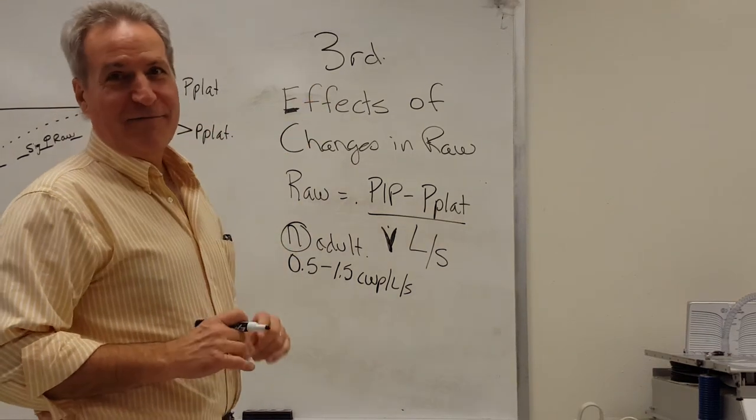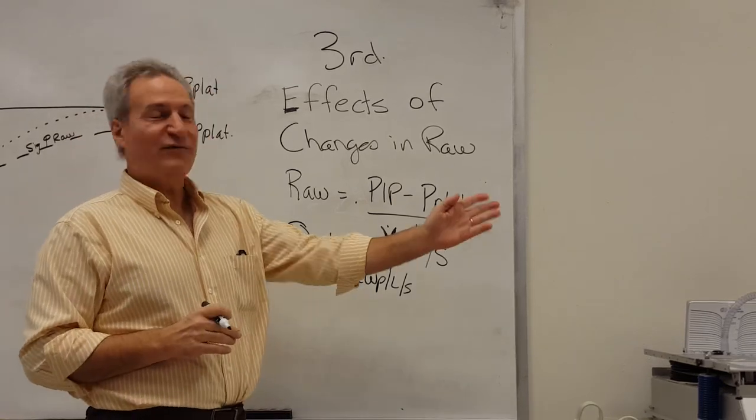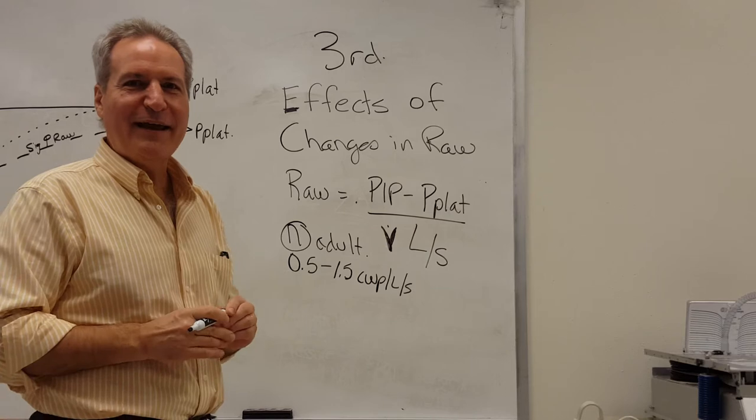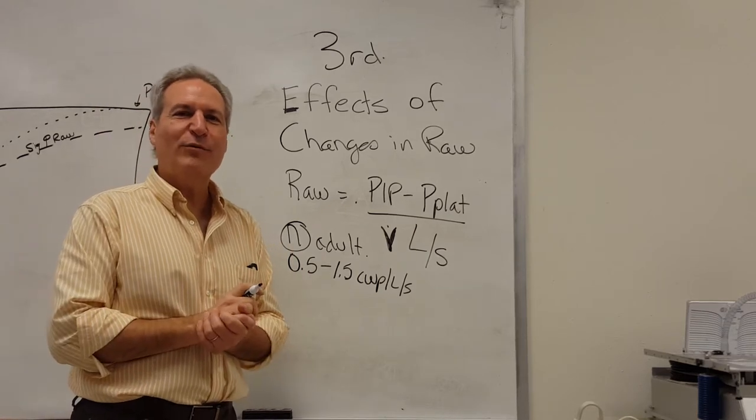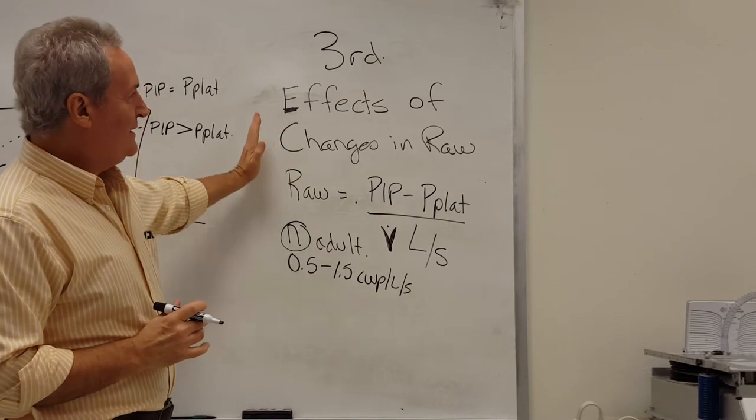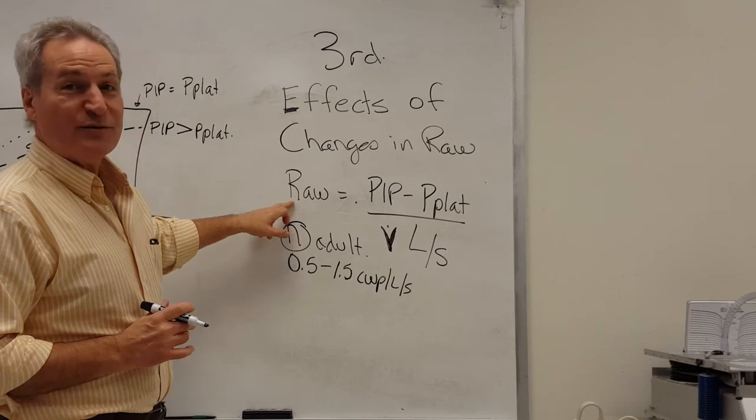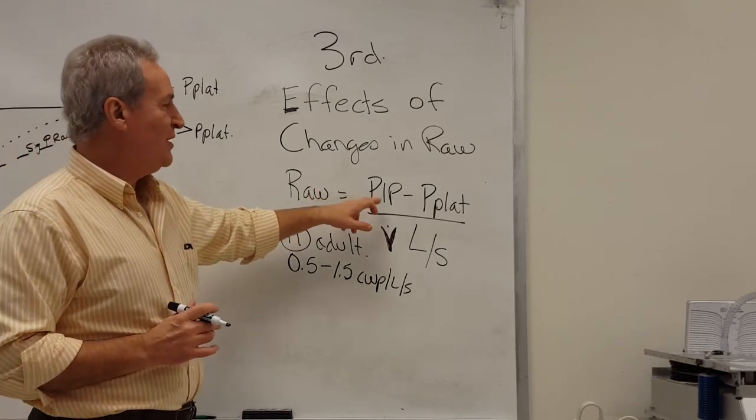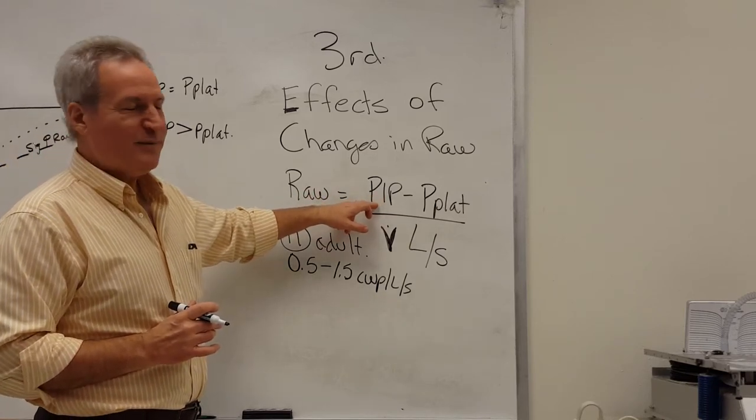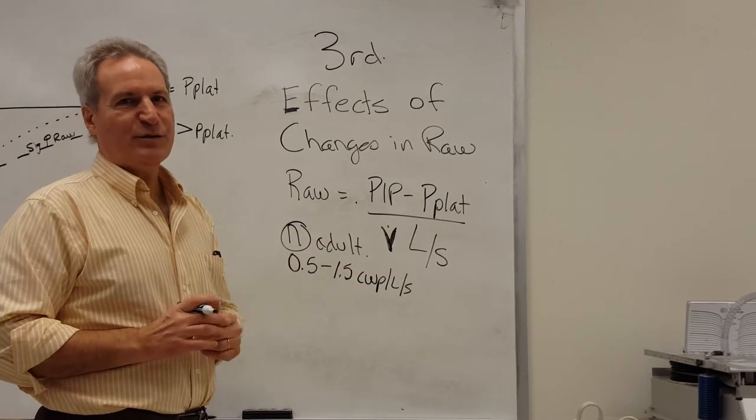Our third and final step that we're going to review before we actually get our hands on the first ventilator, which is the Servo-I, and subsequent ventilators, is the effects of changes in RAW. Remember, RAW, or airways resistance, is the peak inspiratory pressure minus plateau pressure over flow in liters per second.